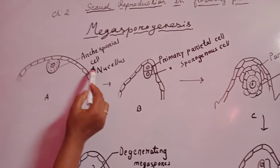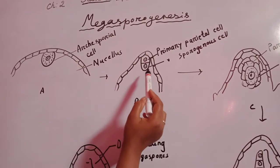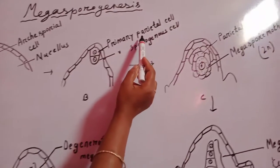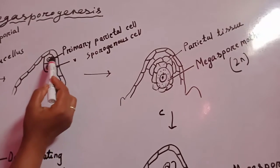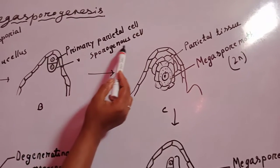Archosporial cells divide and give rise to an outer primary parietal cell and an inner primary sporogamous cell.